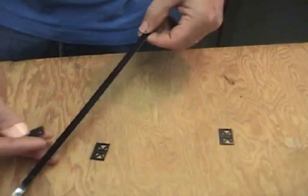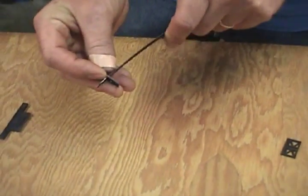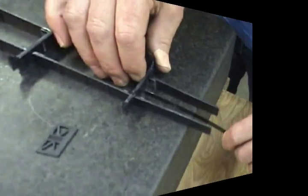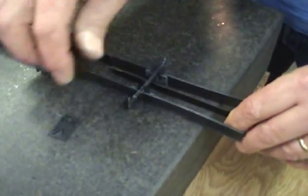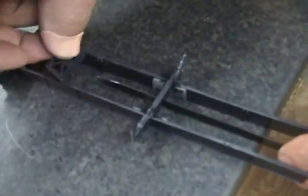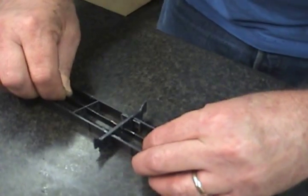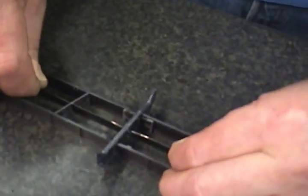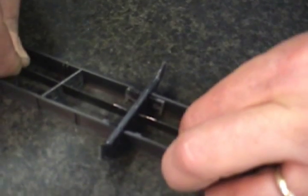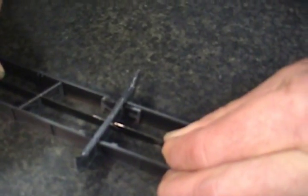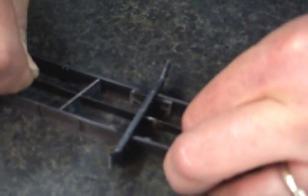Then I'm going to grab my second half and start it through the cross bearer. Now this is why these are sanded and tapered on the ends, so we can pass them through the center. Once I get this one pushed through, I'll push them both through like so.